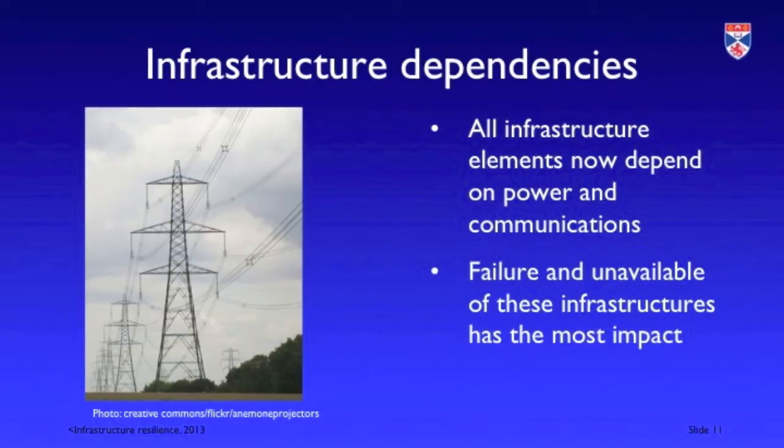If there is an incident that damages or makes unavailable a control center for the electricity supply grid, that's much more damaging than an incident which simply affects some of the pylons in that grid. When disruptive events affect more than one infrastructure — communications and power, say — that has a particularly disruptive effect. So we need to think about the impact of risks across the whole critical infrastructure, not just a single element.